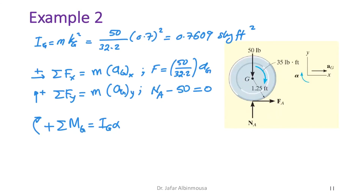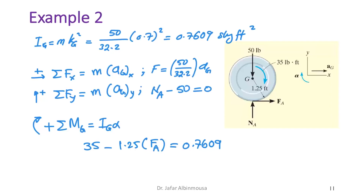The applied moment and friction force both contribute: 35 − 1.25·f_A = I_G·α.